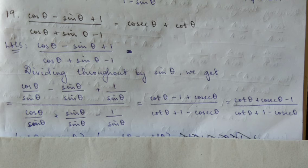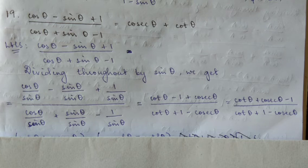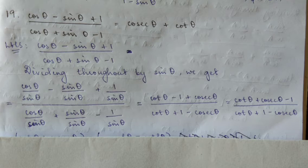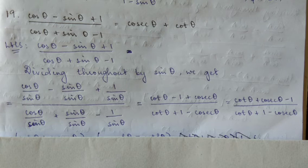Dividing throughout by sin theta, we get cos theta by sin theta, minus sin by sin, plus 1 by sin. So cos by sin gives cot, sin by sin cancels to give minus 1, and 1 by sin gives cosec theta. The term is divided.